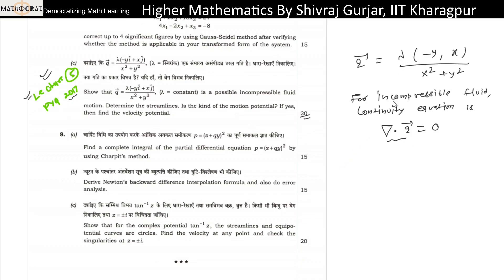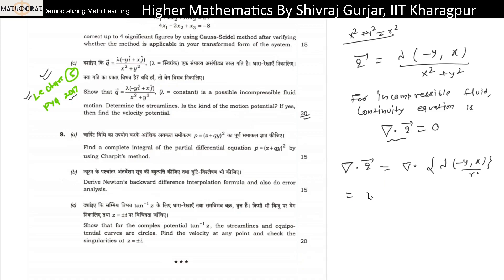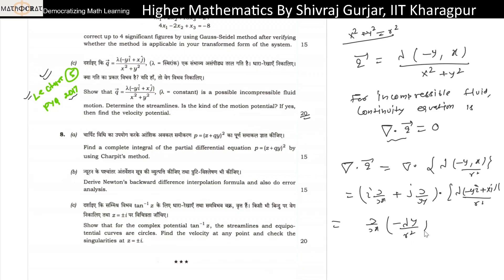This is a two-dimensional flow, so x² + y² is nothing but r². We can simply write this as r². So this is the divergence of lambda times (−y, x) divided by r², which can be written as (i ∂/∂x + j ∂/∂y) dot lambda(−y i + x j) / r². We need to show that this is zero.